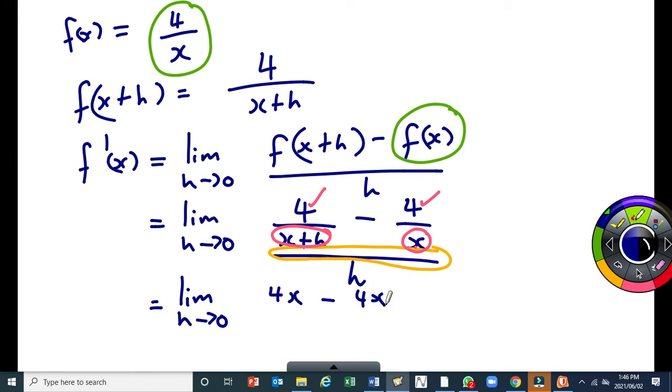Minus 4 times this, that would give you minus 4h. This is all over the LCD, which is the product of the two denominators. That would be x times (x+h). Then we can divide this by this h, so it's divided by h/1. Any questions then?